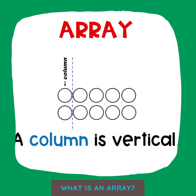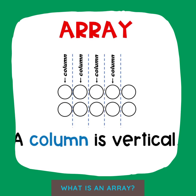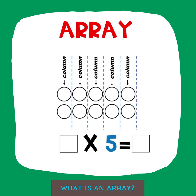An array also has columns. A column is up and down, or vertical. This array has five columns. Notice in the multiplication equation, the second factor is the number of columns, or the number in each row.